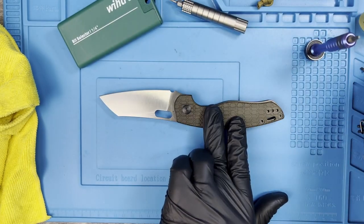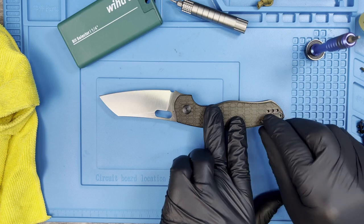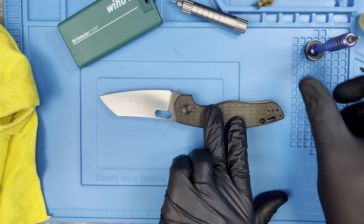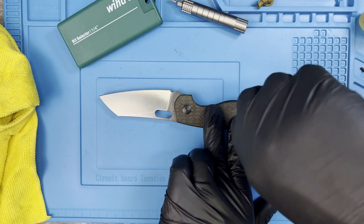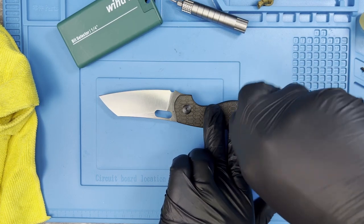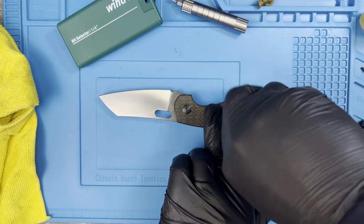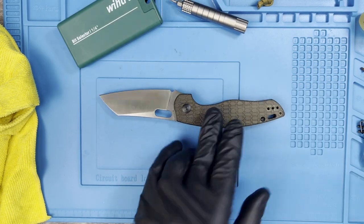And then grab your body screws. At least get one of these snugged down before you let the tension off because you just don't want the scale to slide around. It shouldn't, but it's always good to exercise a little extra caution. There we go. Alright. Yep. That is snugged down.